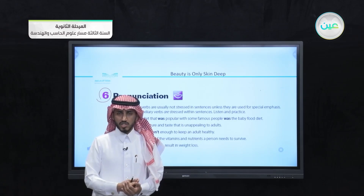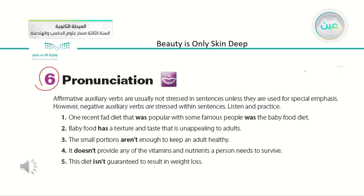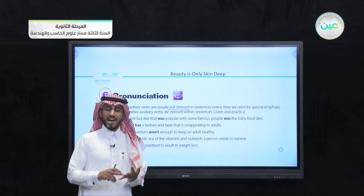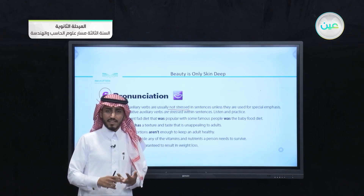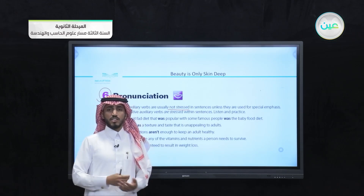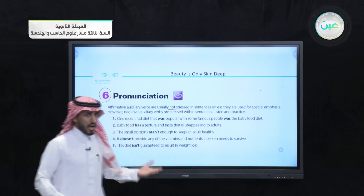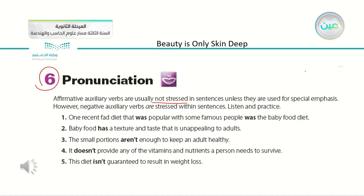In the previous pronunciation lesson, we learned how auxiliary verbs are usually not stressed. Auxiliary verbs are not stressed in sentences unless they are used for special emphasis. The auxiliary verbs are: have, has, and had; do, does, and did; and also the modal verbs in addition to the verb be. On the other hand, negative auxiliary verbs are stressed within sentences. Then we listened to some examples and you were asked to practice and repeat with the recording.